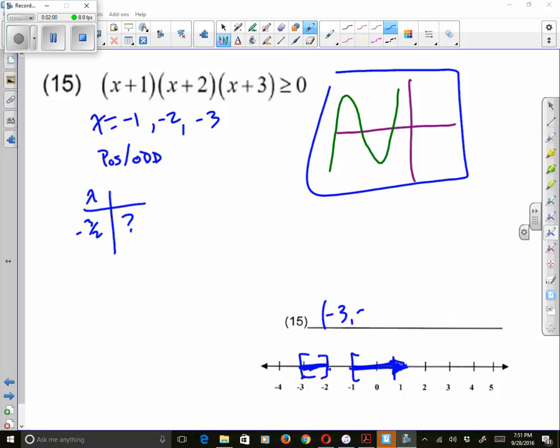This interval notation is going to be negative 3 to negative 2 union - and I blew that already because those should have been square brackets, sorry about that - square bracket negative 3 to negative 2 square bracket, union square bracket negative 1 to infinity round bracket, and we're done.